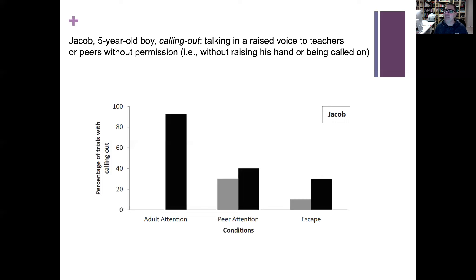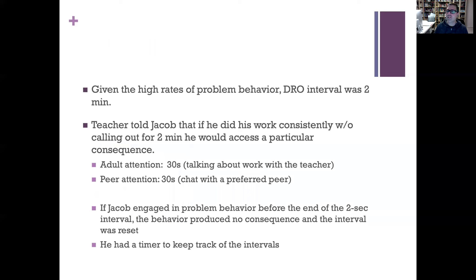They then decided to use a differential reinforcement of other behavior procedure to reduce Jacob's calling out. Calling out was happening quite often, so they chose a DRO interval of two minutes. The DRO interval is the interval of time between reinforcers — a reinforcer will be delivered to Jacob every two minutes, as long as he doesn't engage in the problem behavior.